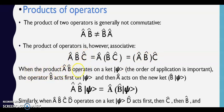When the operator A B operates on a ket psi, the order of application is important. Iska jo order hota hai woh bahut hi important hota hai. The operator B acts first on ket psi and then A acts on the new ket B ket psi.